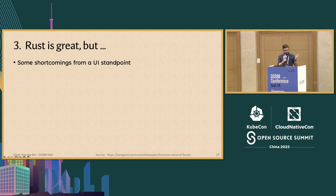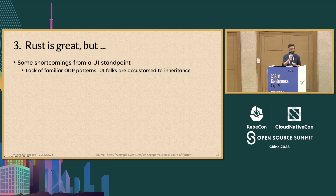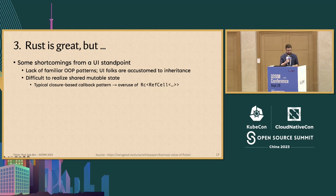There are some shortcomings from a UI standpoint — it's not all daisies and roses. Typically, UI designers are accustomed to inheritance, so when they first see Rust, they complain about the lack of familiar object-oriented design patterns. As such, we've seen brilliant UI frameworks like MakePad and Dioxus offer a form of inheritance with domain-specific languages. A common complaint is that it's difficult to realize shared mutable state in Rust — if you use a typical closure-based callback pattern, your codebase will be littered with reference-counted ref cells or arc mutexes.